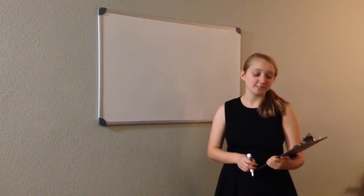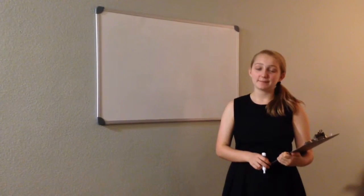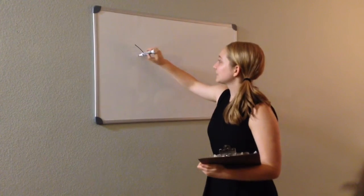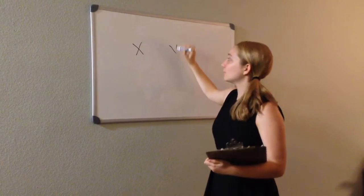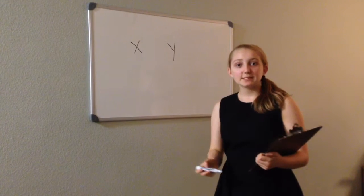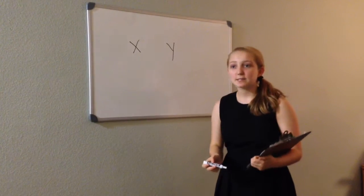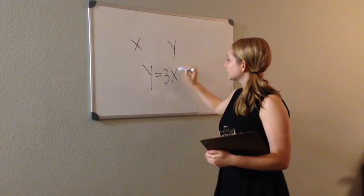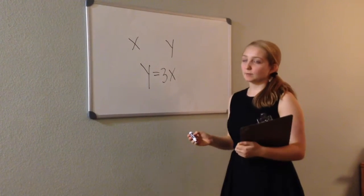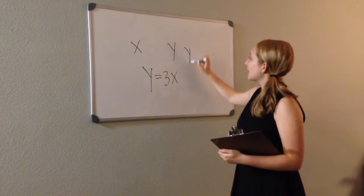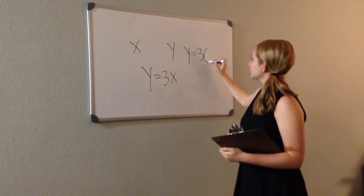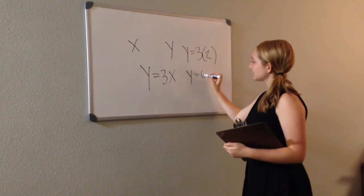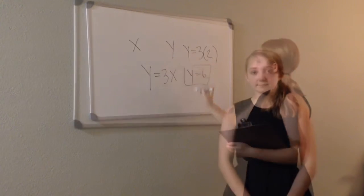But what is a function? A function means that for every input, there is exactly one output. So that means that for every X value, there is simply one Y value. For example, let's say we had the equation Y equals 3X, and let's say that our X value was 2. So Y equals 3 times 2, which means Y equals 6. So your Y value is 6.